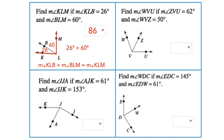Let's look at the bottom right problem. We're asked to find the measure of angle WDC. And we're told some information about the diagram. That the measure of angle EDC is 145 degrees. And the measure of angle EDW is 61. So basically,